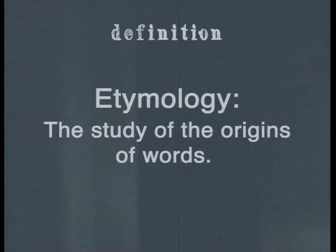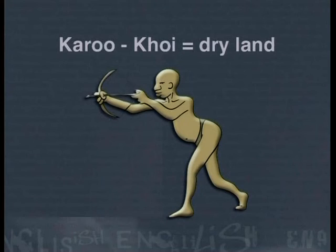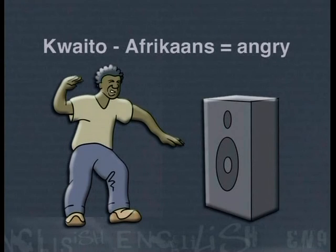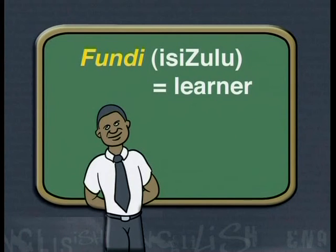Do you remember what etymology means? Etymology is the study of the origins of words. In the first part of this lesson, we looked at words that originated from Greek or Latin. But now let's look at some South African English words that originated right here in South Africa. Karoo comes from the Khoikhoi word kero, meaning dry land. Kwaito music originated in the townships, but the name actually comes from the Afrikaans word meaning angry or vicious. And fundi — as in 'I'm a computer fundi' — comes from the isiZulu word for learner.